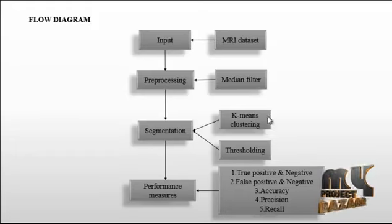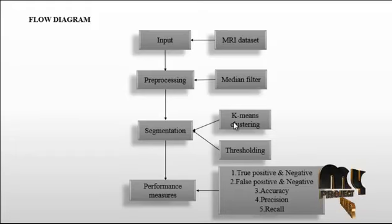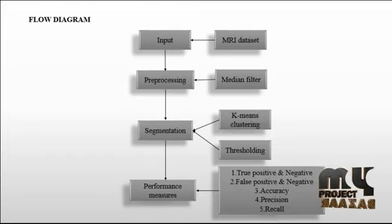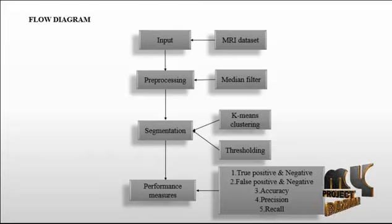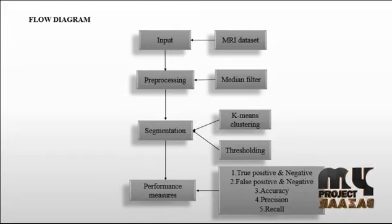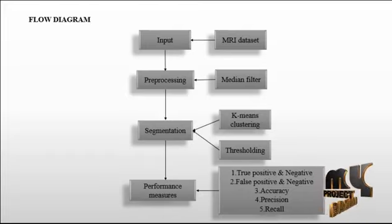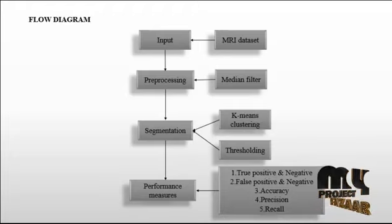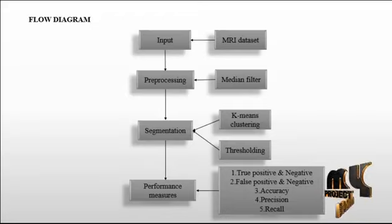The skull region, captured along with the brain region in the images, has different intensity and covers a large area. The skull region is identified and removed using morphological operations. The morphological closing operation uses a structuring element — a small binary matrix of pixels each with a value of zero. The closing of an image by a structuring element is a dilation followed by erosion, while the opening is an erosion followed by dilation.